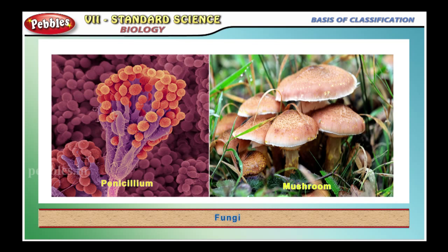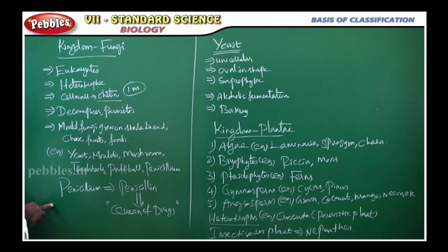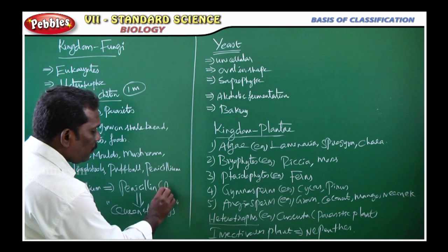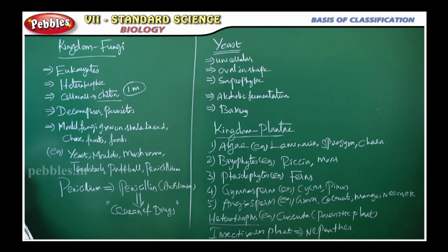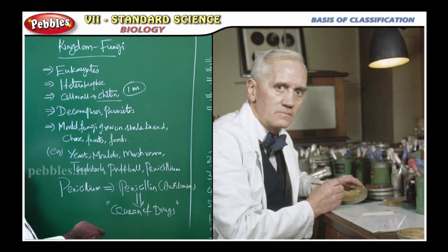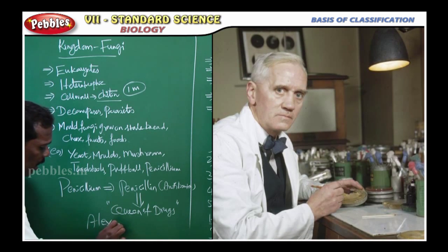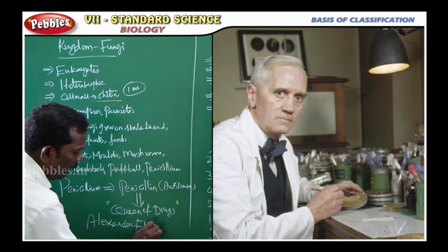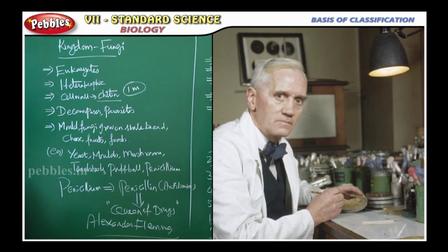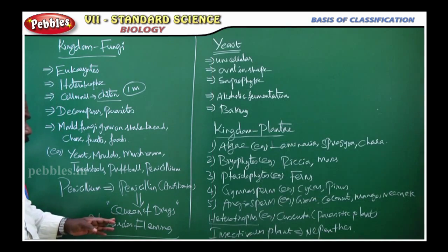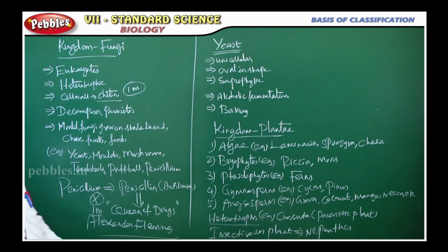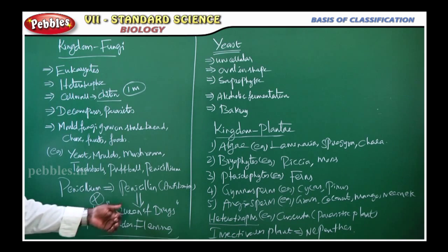Then, one of the most important things is the fungus Penicillium. This fungus produces an antibiotic. The antibiotic was extracted from Penicillium by Alexander Fleming. He discovered this Penicillium antibiotic. This is the first discovered antibiotic, and that is why it is called the Queen of Drugs.